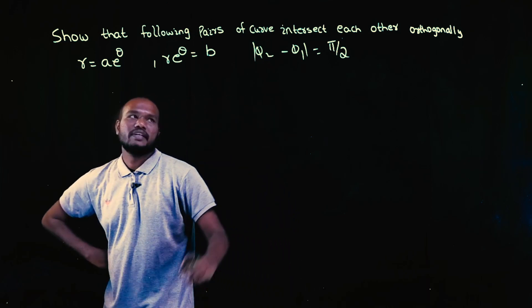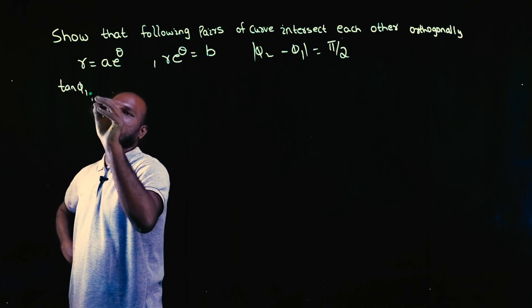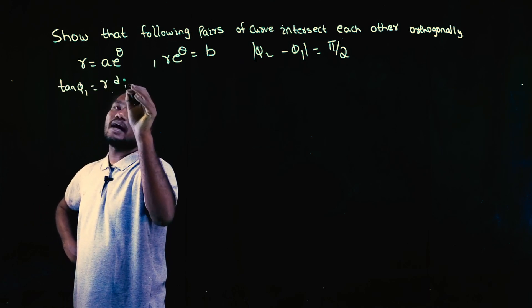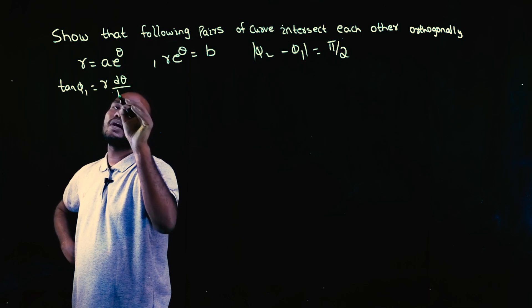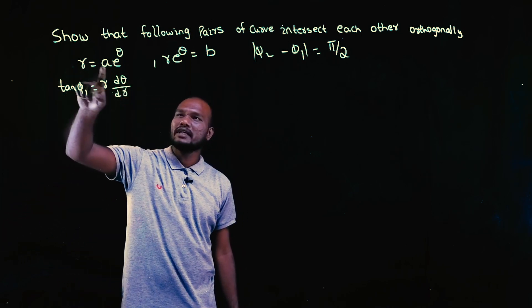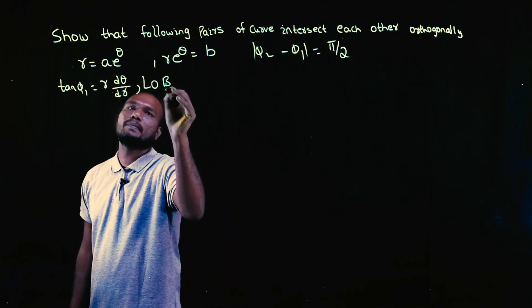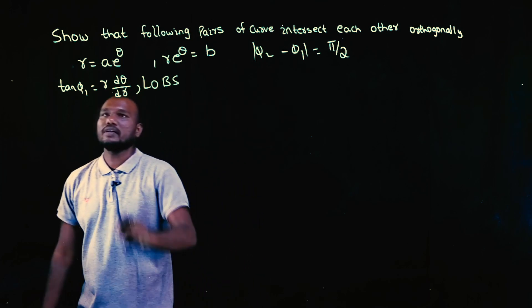So what we need to do: we need to calculate phi 1, we need to calculate phi 2. To calculate phi 1, we have to calculate tan phi 1. What is tan phi 1? r times d theta upon dr. Right, see here r is given but it looks a little complicated. Whenever you feel a little complicated, always use log on both sides.